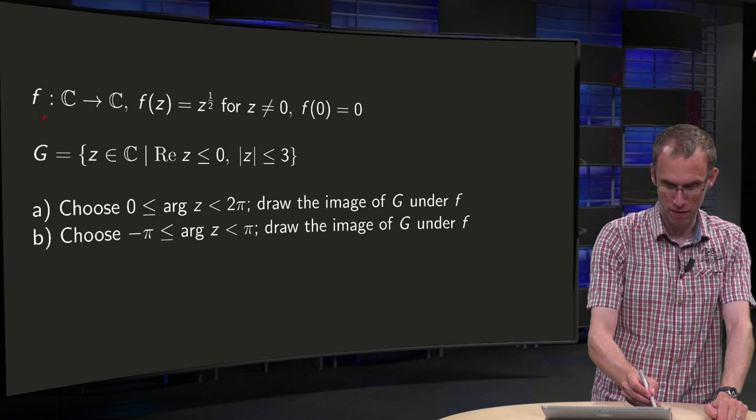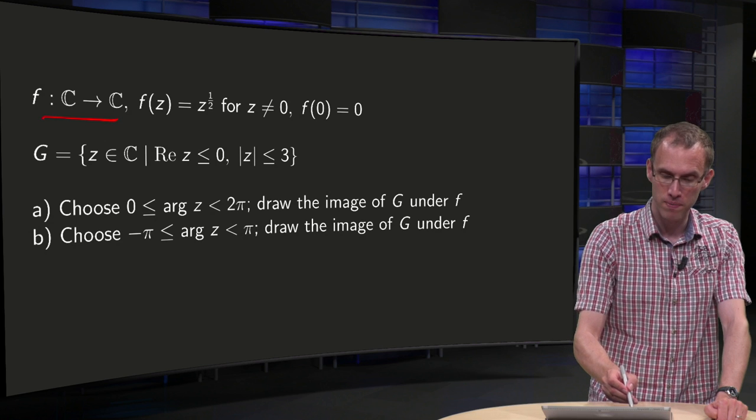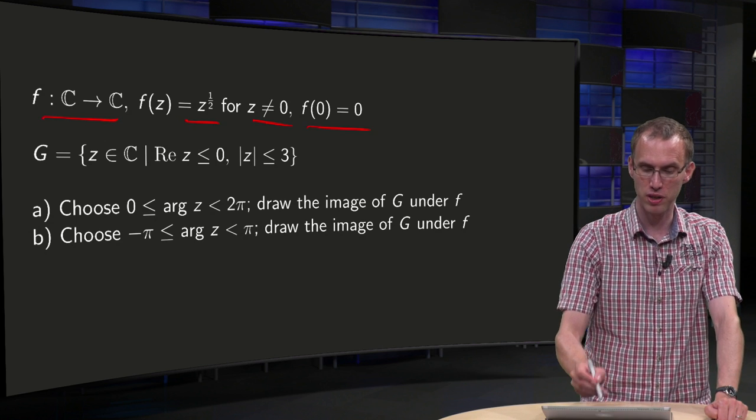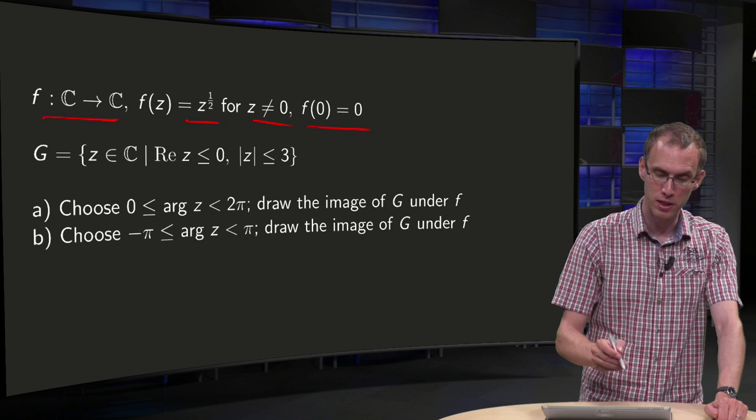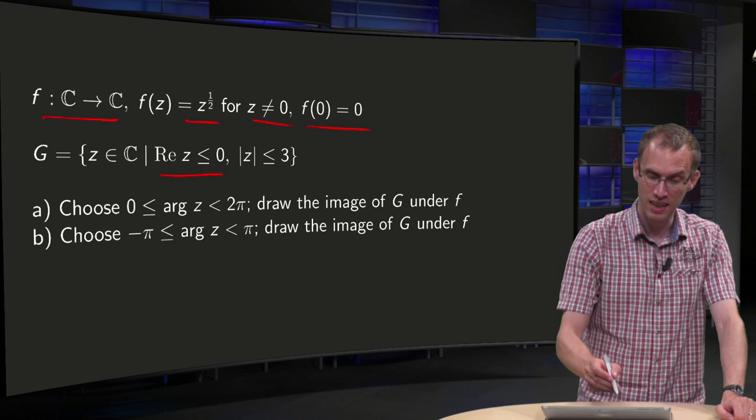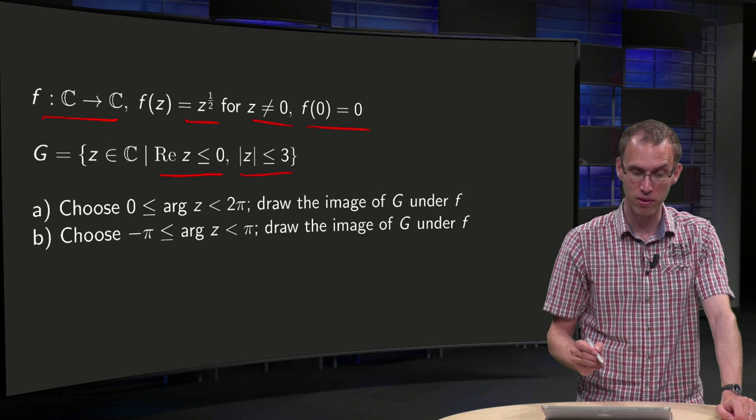So we have our function f from C to C, z to the power of one half for z not equal to zero and f of zero equal to zero. Then we set our region G, the real part of z negative, norm of z smaller equal to three.